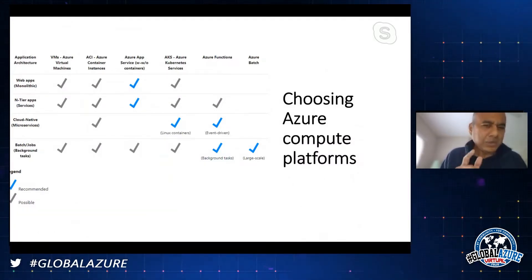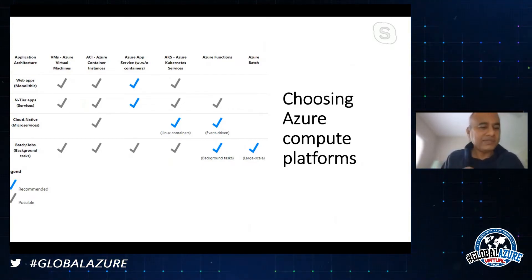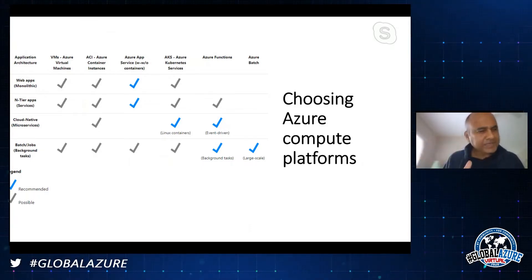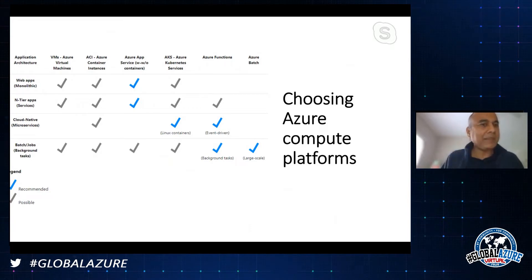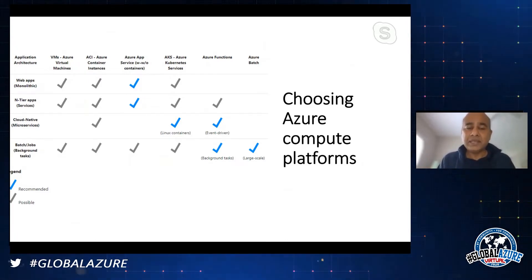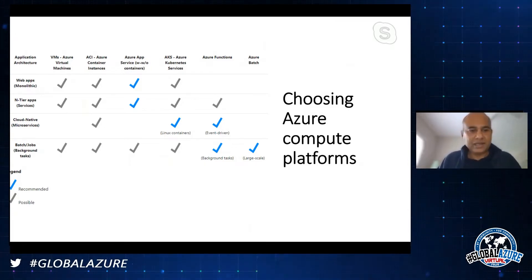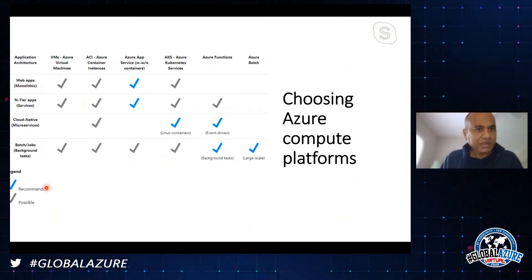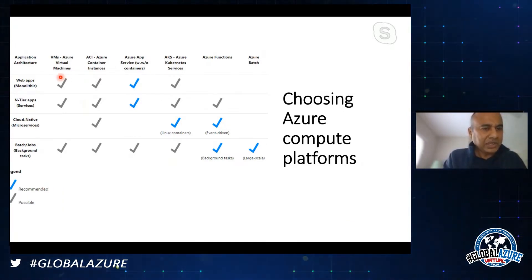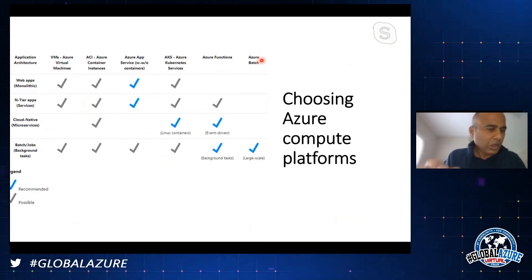I'd like to give a shout out to the Azure docs team - most of my examples come from the documentation. This diagram shows the spectrum of compute options: Azure VMs, Azure Container Instances, Azure App Service with and without containers, AKS, Azure Functions, and Azure Batch. The tick marks in blue show the recommended option. If you have a web app you want to scale up and down with out-of-box capabilities, App Service is a great choice.